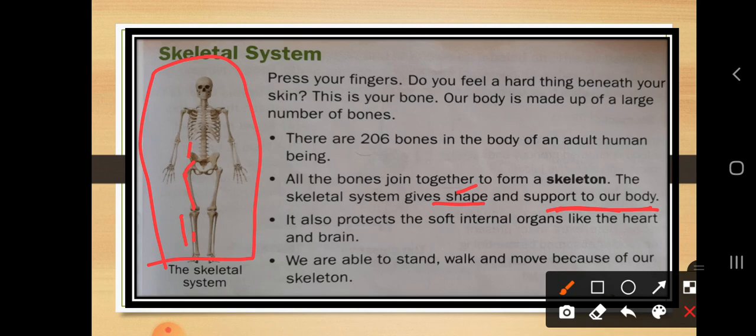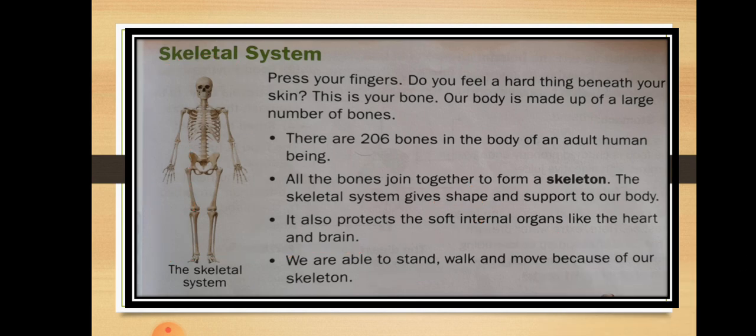Another function of the skeletal system is that it protects the soft internal organs like the heart and the brain. The heart is in our chest part, and the brain is in our head. Due to the presence of the skeleton, these organs are protected. The skeletal system also helps human beings to stand, walk, and move in day-to-day life.